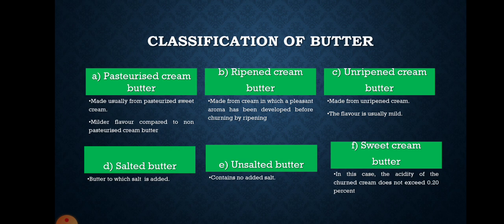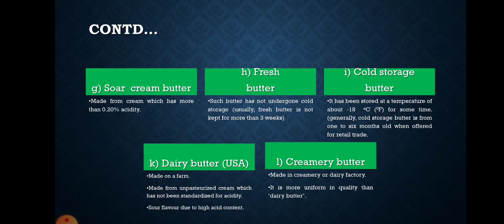Unripened cream butter is made from unripened cream in which starter culture or butter culture is not added; the flavor of such butter is usually mild. Salted butter is butter to which salt is added. Unsalted butter contains no added salt. Sweet cream butter: in this case the acidity of the cream in the churn does not exceed 0.20 percent.